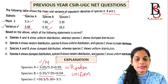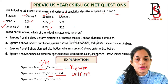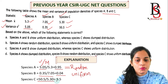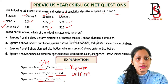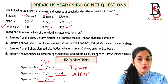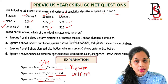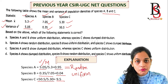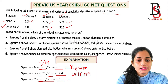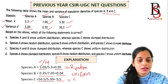For species C: variance is 50.5 and mean is 5.30, so dividing variance by mean gives 9.5. This value is greater than 1. If the ratio of variance to mean is greater than 1, the species shows clumped distribution. So species C shows clumped distribution.